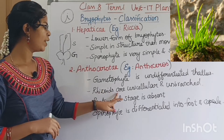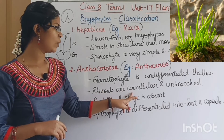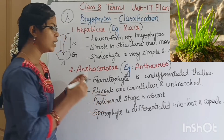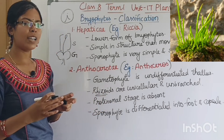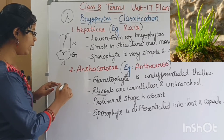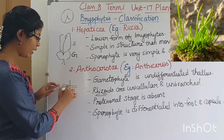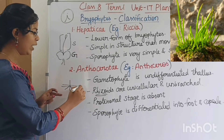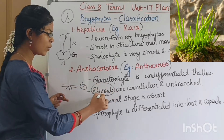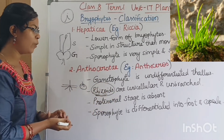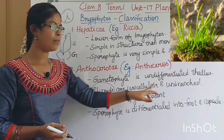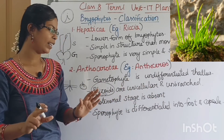The rhizoids are unicellular and unbranched. Rhizoid is a special type of root-like structure that helps in fixation and absorption.